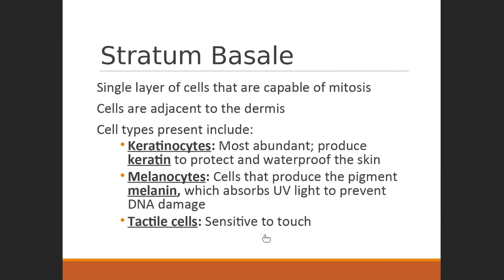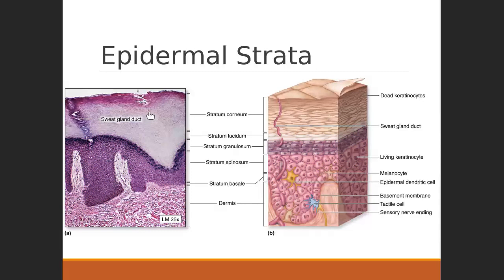In the stratum basale we see mostly keratinocytes — squamous cells with that modified keratinized structure. We also see melanocytes, which produce the pigment melanin in response to UV light. We've all experienced this when UV light increases skin pigmentation in the form of a tan. We also get tactile cells, which are sensitive to touch and detect deformation in the tissue. This single layer is our stratum basale.